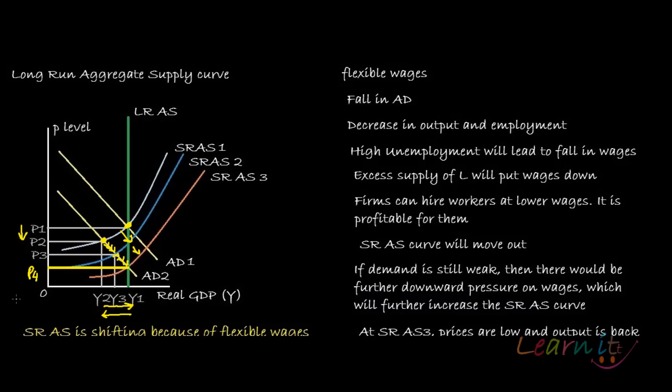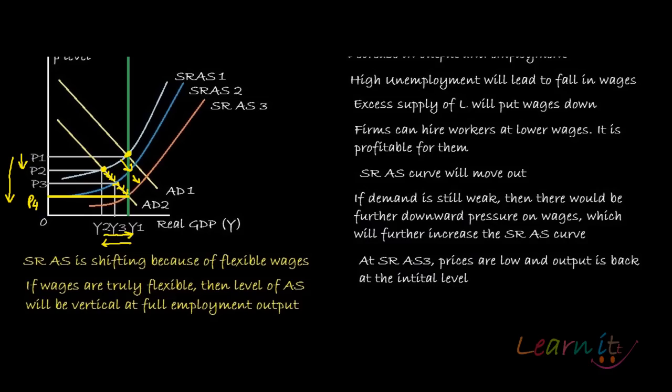The economy experienced a fall in aggregate demand. Because of the fall in aggregate demand, there was high unemployment. In the long run, wages are flexible, so people started accepting lower wages and the aggregate supply curve moved outwards. In the long run, any increase in prices that sellers receive for their final goods is completely offset by the proportional increase in the prices that sellers pay for their inputs.